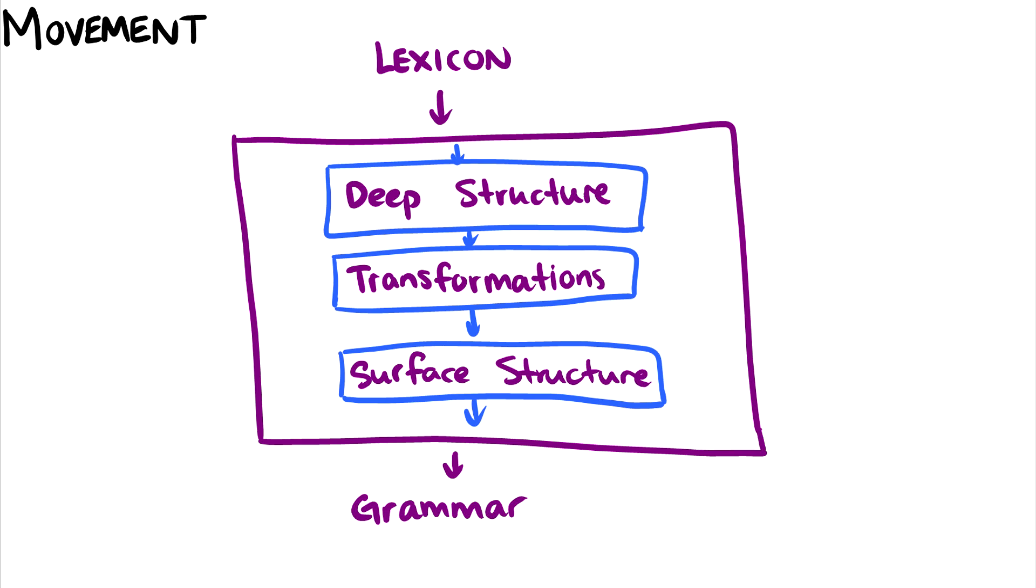In this video, we're going to talk about movement, and specifically subject-auxiliary inversion. I kind of introduced movement in the last video with perfect phrases and progressive phrases, but we'll look at it more formally now.